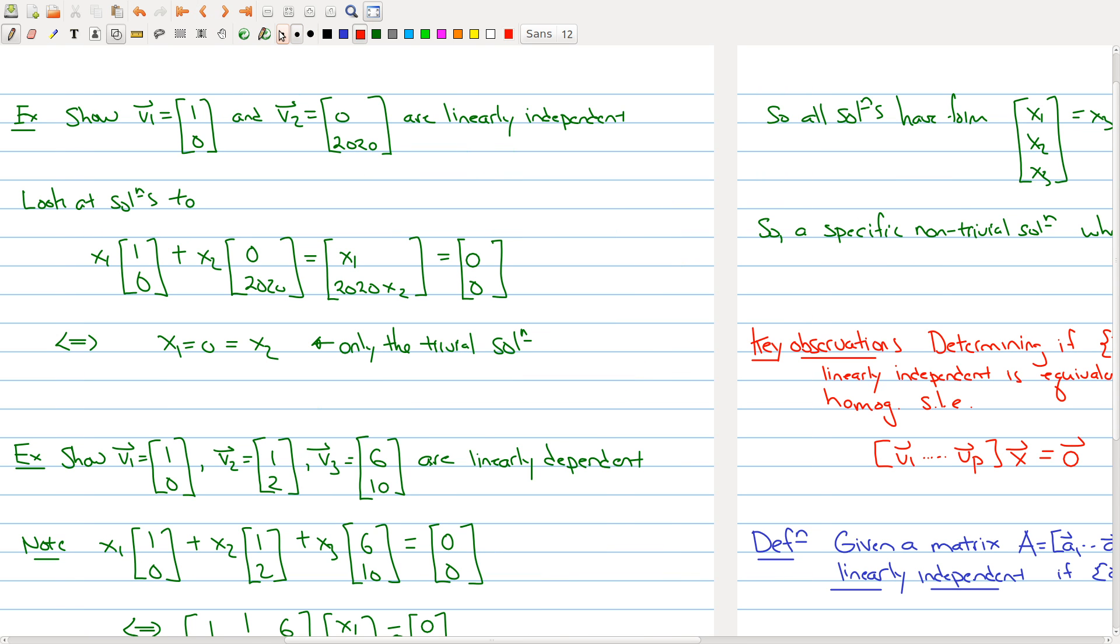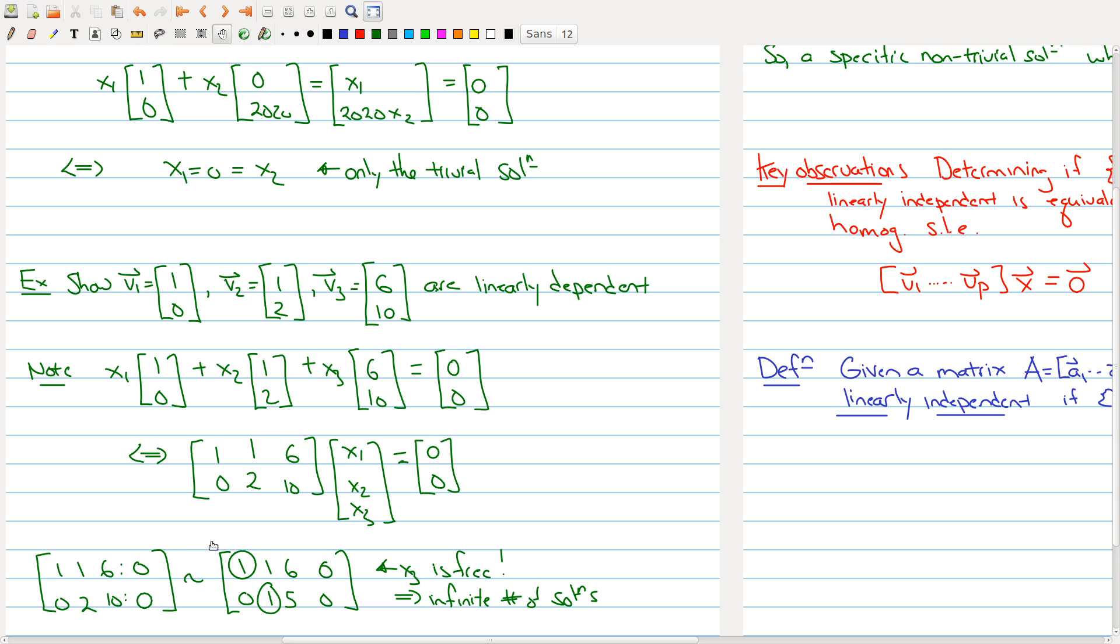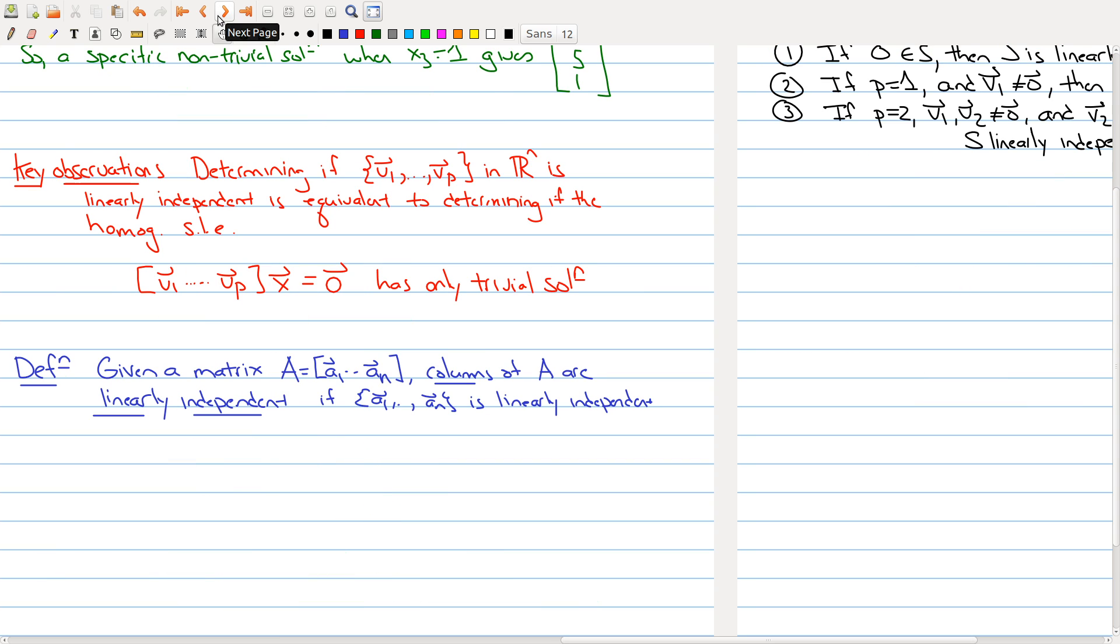Let me just go back a page here to highlight this fact. Right here we have a matrix and we're looking at a homogeneous system of linear equations to determine if these sets of vectors are linearly independent or dependent. Now we can talk about the columns of a matrix.